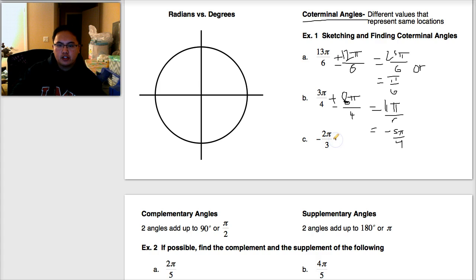And the last one, I'm going to add and subtract 2π to this one. I need common denominator, so I'll multiply top and bottom by 3, which makes this 6π over 3. If I add them, negative 2π plus 6π will be 4π over 3. And then if I subtract, negative 2π minus 6π gives me negative 8π over 3. So those are my coterminal angles.